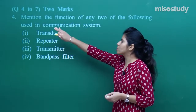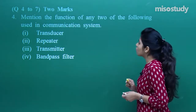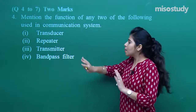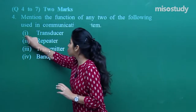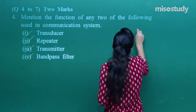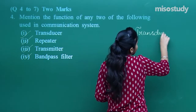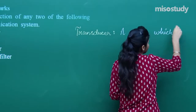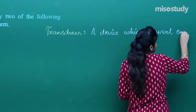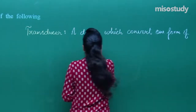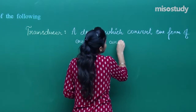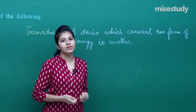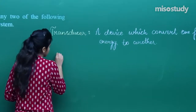Questions four to seven are two mark questions. Question four: mention the function of any two of the following used in a communication system. The four terms are transducer, repeater, transmitter, and band pass filter. I will give the definition of all four. A transducer is a device which converts one form of energy to another — for example, a photocell converts light into electrical energy.